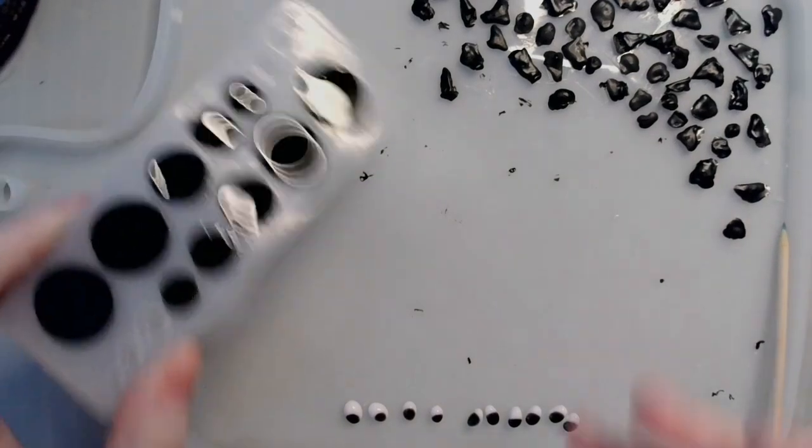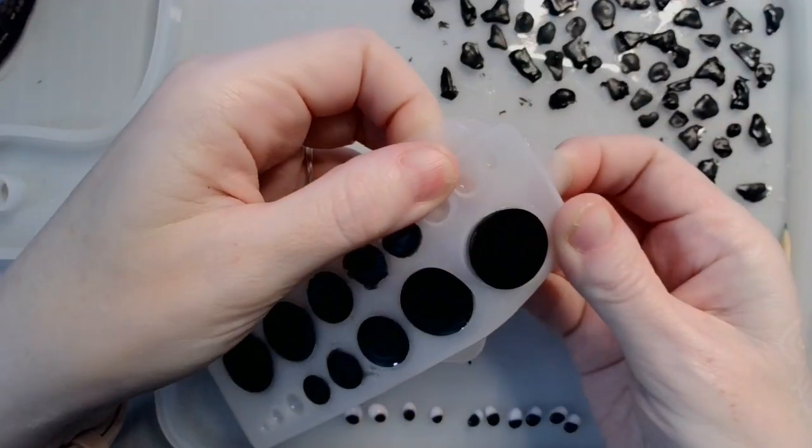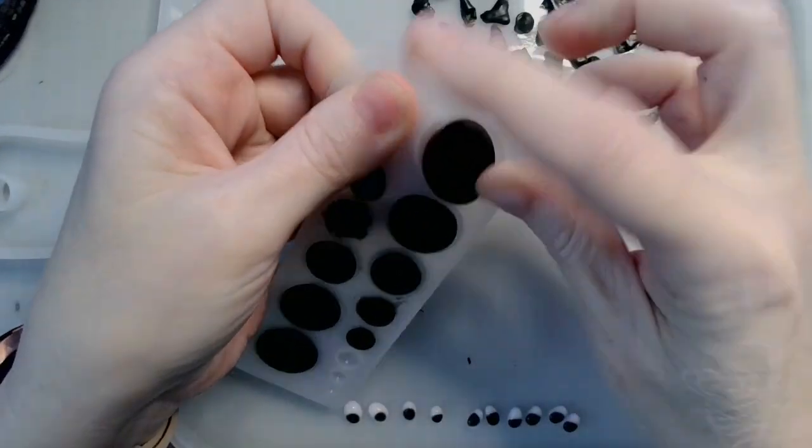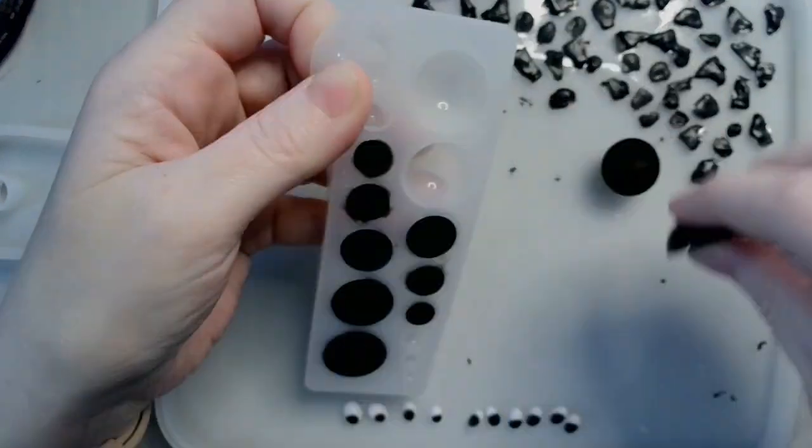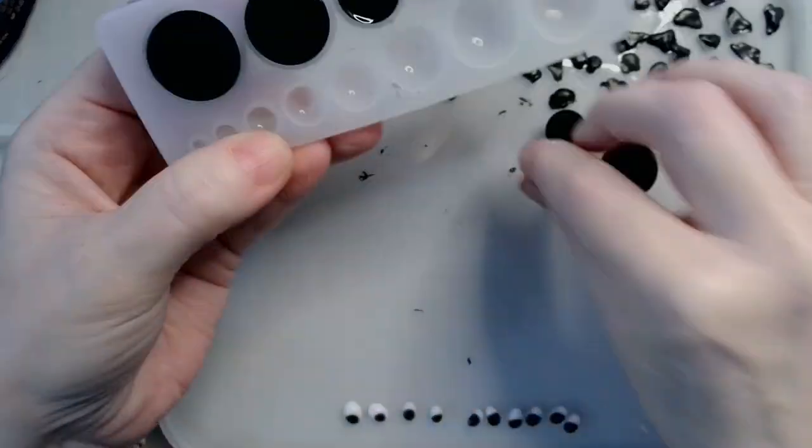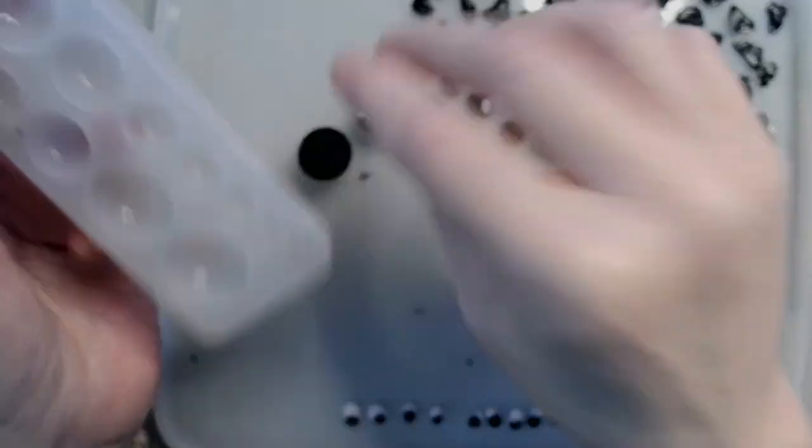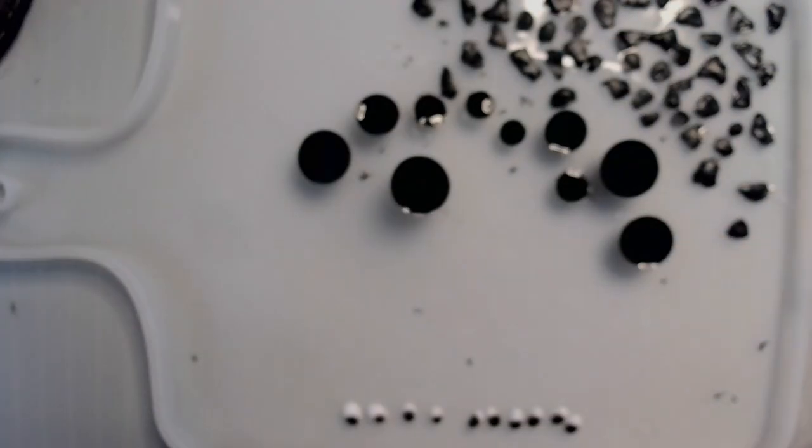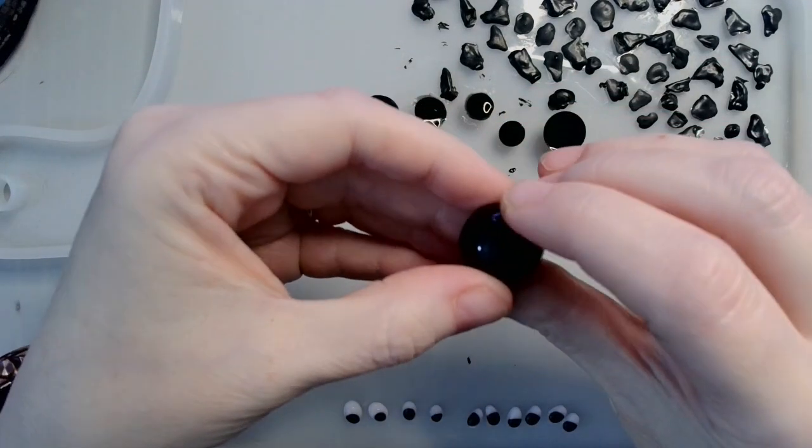So here we are back with the mess. Our little half spheres have cured, so we'll go ahead and get those out. So those are out. And what I'm gonna do is we are going to take two halves and make a whole.